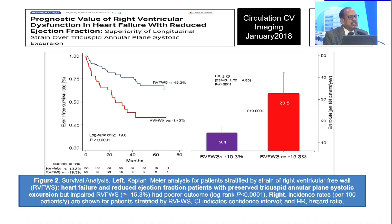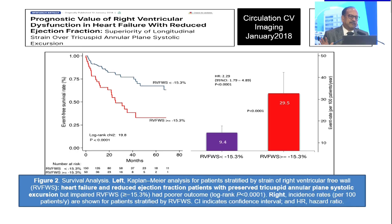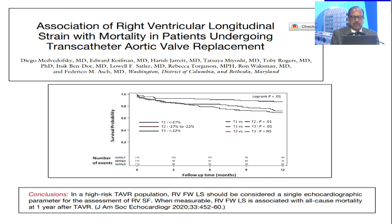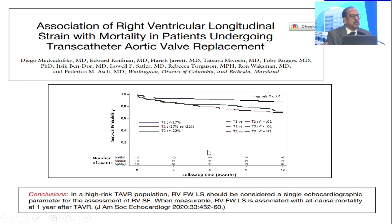If you have an RV GLS which is minus 15 or more, you have a good outcome as compared to RV GLS which is minus 15 or less. In patients with heart failure with reduced ejection fraction, we always talk of HFrEF and four pillars of heart failure, but do we ever look for what is the most important prognostic factor? Certainly no. This is another slide — patient undergoing a TAVR procedure — what is the survival probability when subjected to RV free wall strain analysis? Good RV strain, good survival. Poor RV strain, poor survival.